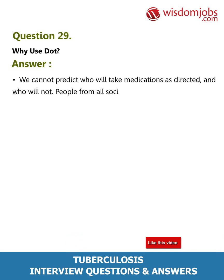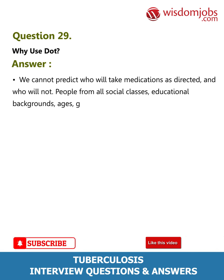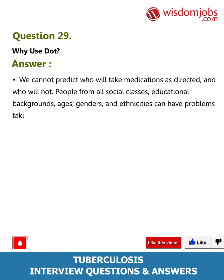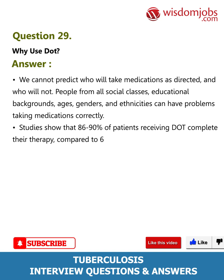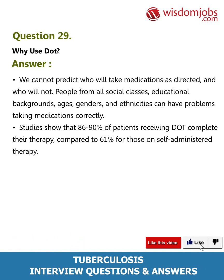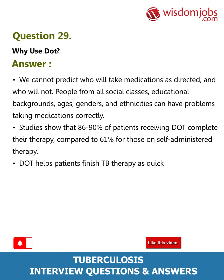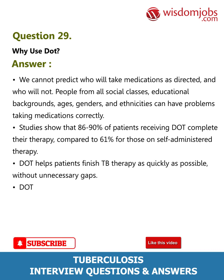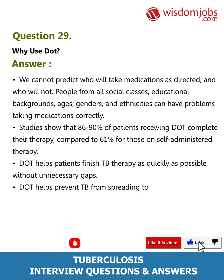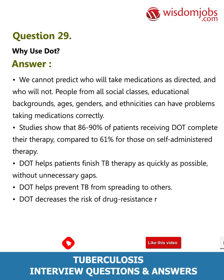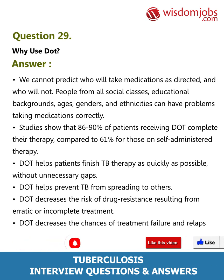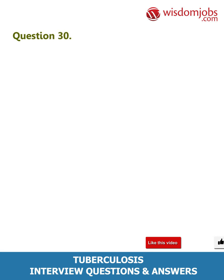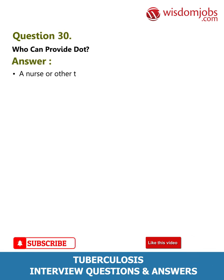Question 29: Why use DOT? Answer: We cannot predict who will take medications as directed and who will not. People from all social classes, educational backgrounds, ages, genders, and ethnicities can have problems taking medications correctly. Studies show that 86 to 90 percent of patients receiving DOT complete their therapy, compared to 61 percent for those on self-administered therapy. DOT helps patients finish TB therapy as quickly as possible without unnecessary gaps, helps prevent TB from spreading to others, decreases the risk of drug resistance, and decreases the chances of treatment failure and relapse.